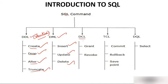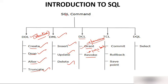DCL — Data Control Language — has two main commands: GRANT and REVOKE. GRANT means giving permission; for example, if an employee joins the organization, you grant them permission to access the database. REVOKE means taking permission back; if the employee leaves the organization, you revoke all the permissions previously given.